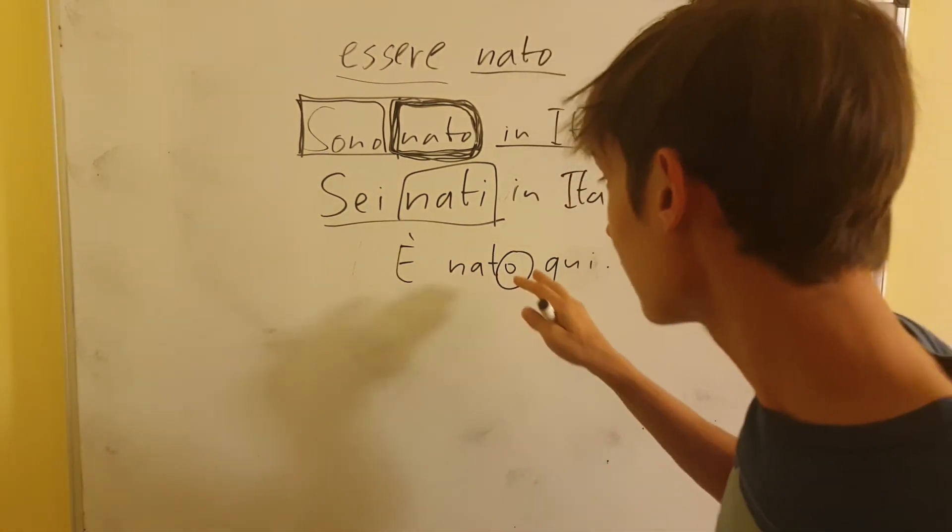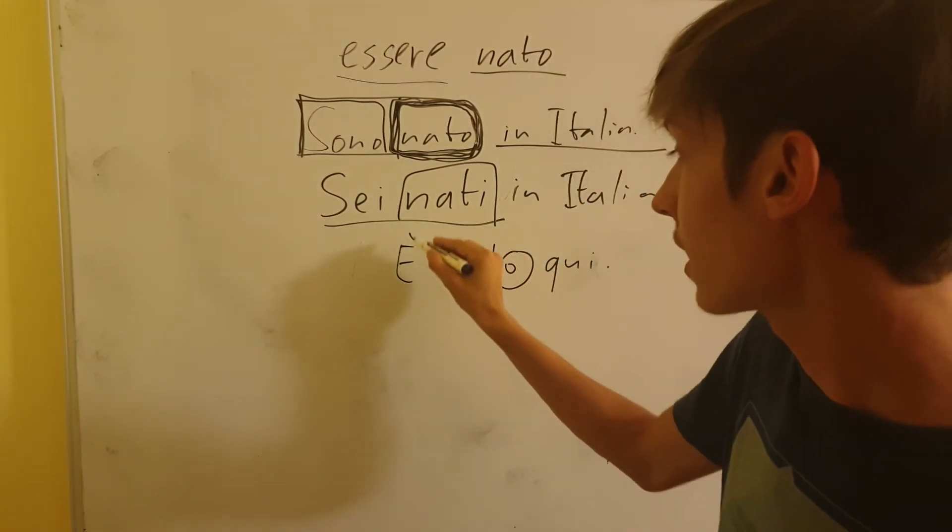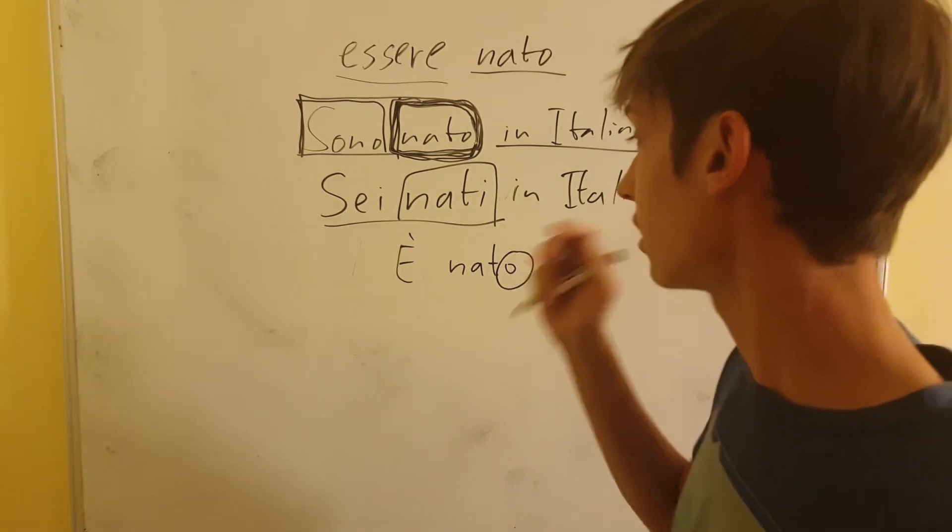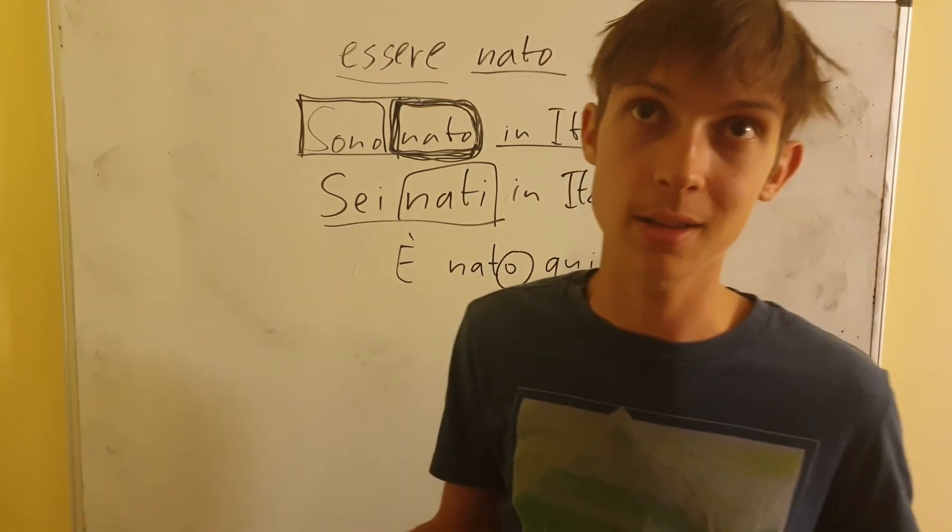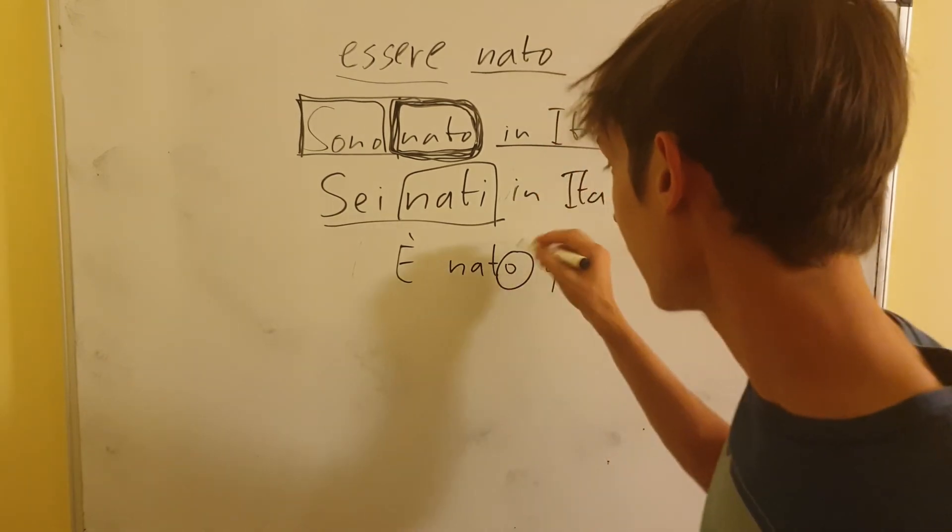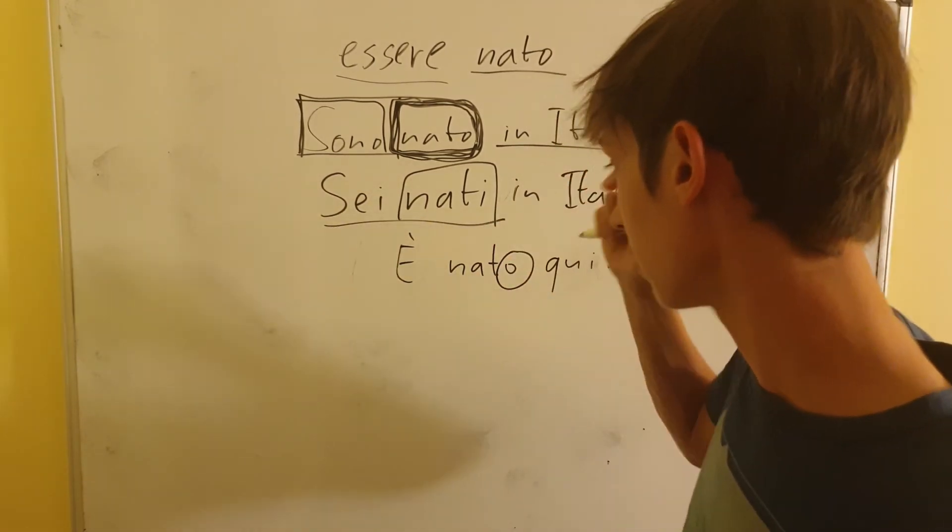So because it's nato, we know we can just say è, we don't have to say lui, but we can just say è without saying the lui or lei if it was she. But the ending is O, so it must be masculine gender.